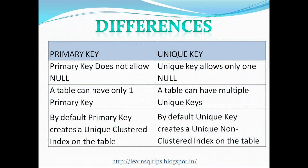To summarize the differences we have seen: primary key doesn't allow nulls, unique key allows only one null. A table can have one primary key and multiple unique keys. By default, primary key creates a unique clustered index, and by default unique key creates a unique non-clustered index on the table.